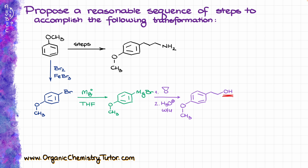We have the OH over here, and we wanted to have a leaving group, and we know that OH is not a particularly good leaving group. So we'll need to convert that OH into a good leaving group. There are multiple different ways how we can do it — I will choose the tosylation. This way, my OH now becomes a tosylate, which is an excellent leaving group, and I can easily replace it with cyanide in a simple SN2 reaction.